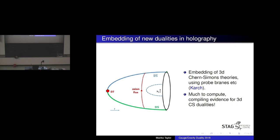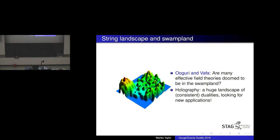The swampland discussion dominated String Phenomenology earlier this summer: the statement pioneered by Ooguri and Vafa that many effective field theories cannot come out of string theory. Coming from one conference to another, we're almost switching it the other way around — we have a huge landscape of consistent dualities, many already top-down string theory dualities, and we're looking for new real-world applications. The picture is meant to be the landscape of string vacua; if your theory is not on this landscape, it's living in the swampland.